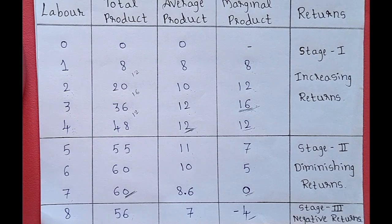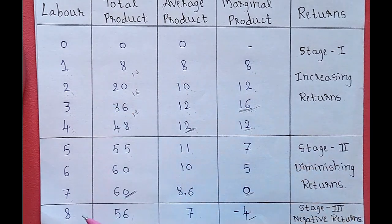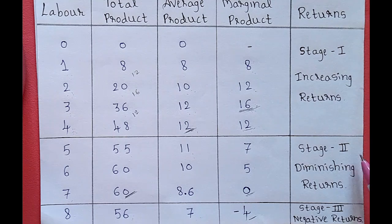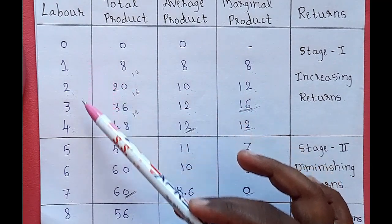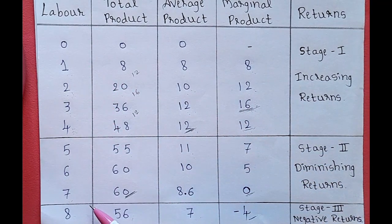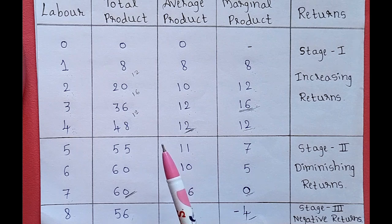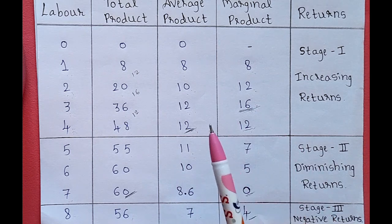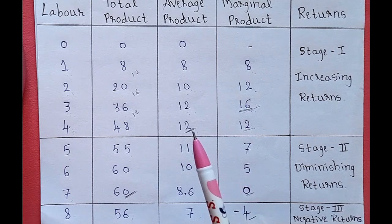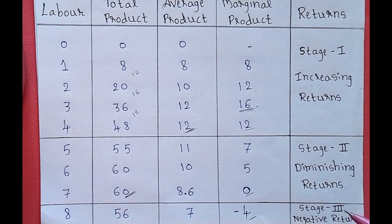In this example, the farmer keeps other factors constant and only increases labour. In stage 1 he gets increasing returns, in stage 2 diminishing returns, and in stage 3 negative returns. This is because the farmer is only increasing workers, not increasing work efficiency. In the short run, raw materials and land cannot be increased — they remain constant. So when workers alone are increased excessively, returns keep diminishing.